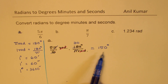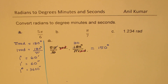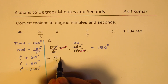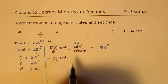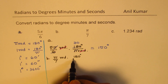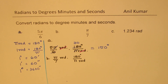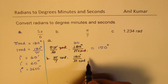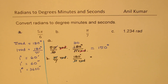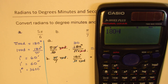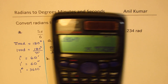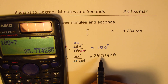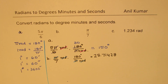Now let's look at the second example: π/7. If I have π/7 in radians and need to convert to degrees, I multiply by 180 degrees divided by π radians. We cancel radians and π, but when we divide 180 by 7 we get a decimal number: 25.71428. So we get a decimal degree.